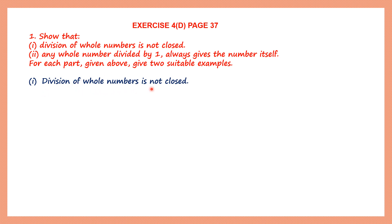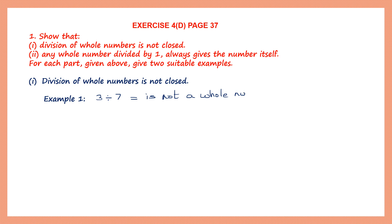The first part is: division of whole numbers is not closed. The question says for each part given above, give two suitable examples. Example 1: take 3 divided by 7. Now 3 and 7 are whole numbers, but 3 divided by 7 is not a whole number.